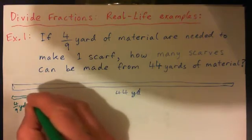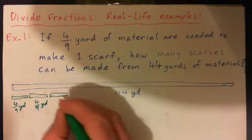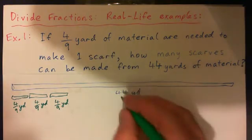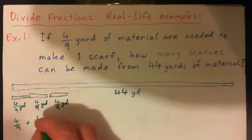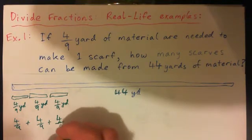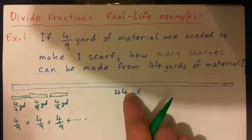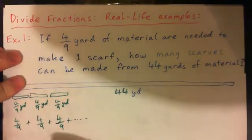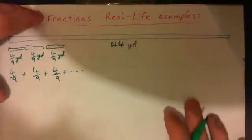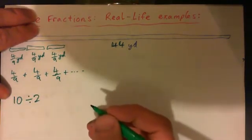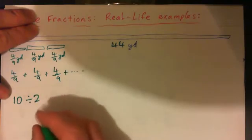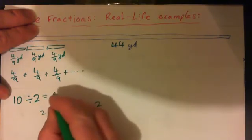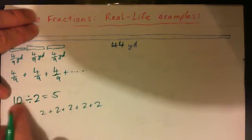How many of these little 4 ninths yards would need to add up to give 44? That's what it's saying. In other words, 4 ninths plus 4 ninths plus 4 ninths — if you keep adding these, how many do you need to add together to get to 44? If you remember when we introduced fractions, we said 10 divided by 2 is 5. Why? Because one way of thinking about it is how many 2's are in 10? 2 plus 2 plus 2 plus 2 plus 2 — there are five 2's in 10.